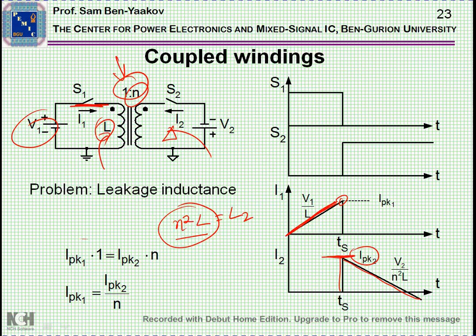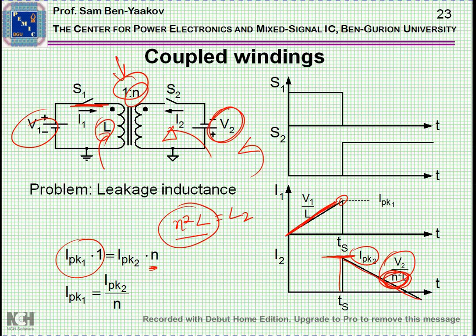Also, since we have one-to-N ratio, the peak current I peak one times one should be equal to I peak two times N, and consequently the peak current will not be the same. They'll be in the same ratio of the current ratio. The slope then would be V2 divided by the inductance seen through this winding. So these are the very basic relationships that we would need in order to understand the operation of the flyback converter.